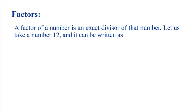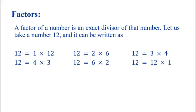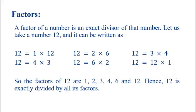Now, come to factors. A factor of a number is an exact divisor of that number. Let us take the number 12. It can be written as: 12 = 1×12, or 12 = 2×6, or 12 = 3×4, or 12 = 4×3, or 12 = 6×2, or 12 = 12×1. So the factors of 12 are 1, 2, 3, 4, 6 and 12. 12 is exactly divided by all its factors.